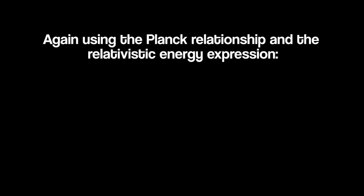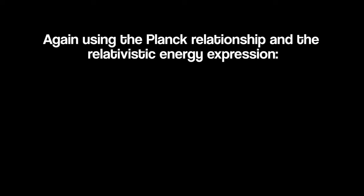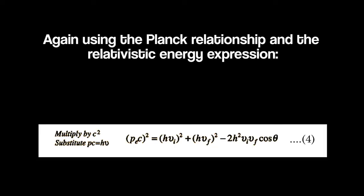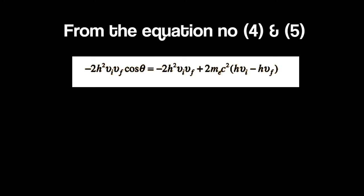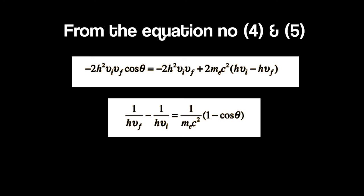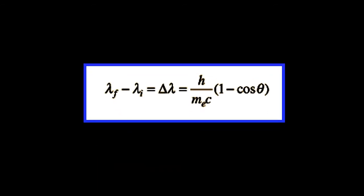Again using the Planck relationship and the relativistic energy expression p e c square equal to h nu i whole square plus h nu f whole square minus 2 h square nu i nu f cos theta which is equation number 4. Now by squaring equation number 4 we get equation number 5. From equation number 4 and 5 we get this equation which can be arranged to 1 by h nu f minus 1 by h nu i equal to 1 by m e c square into 1 minus cos theta. And finally the standard Compton formula is lambda f minus lambda i equal to delta lambda equal to h by m e c into 1 minus cos theta.